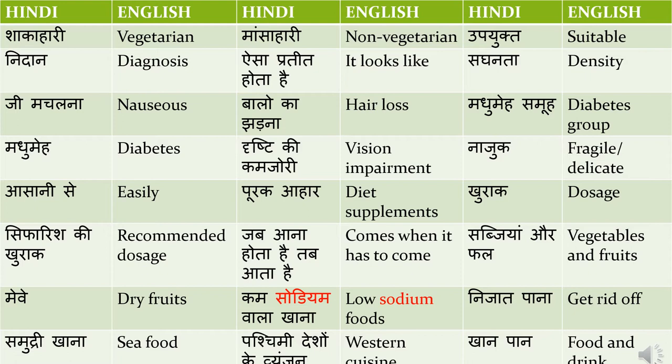'Madumeha samuha' means diabetes group — 'madumeha' is diabetes. You should remember this disease name because it is very common in dialogues, so it will pay off to remember it. If not, you can translate it as 'diabetes', but using 'madumeha' gives a good impression. Your overall aim should be to improve your conversion power in translation. 'Drishti ki kamzori' means vision impairment.